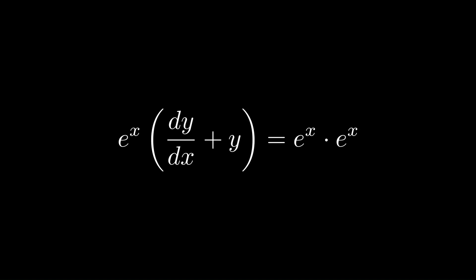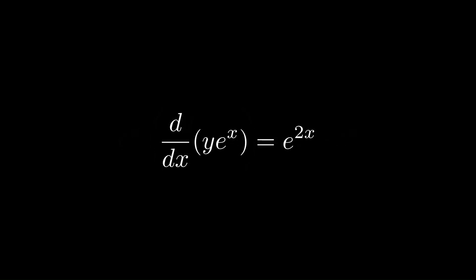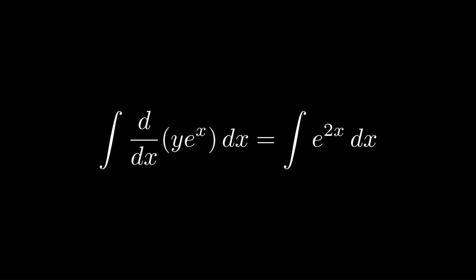Looking at this differential equation, you can see a product rule situation on the left side — we have the derivative of y and just y, with e^x and the derivative of e^x multiplied in. So the left side is the derivative of (y · e^x), and the right-hand side is e^(2x).